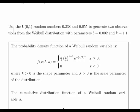In this presentation we are going to look at the Weibull distribution and generating random numbers. Use the uniform distribution, and we have two random numbers drawn from that distribution, 0.238 and 0.655, and what we want to do is generate two observations of the Weibull distribution with parameters b equal to 0.002 and k equal to 1.1.